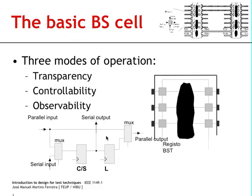You also see here that each basic boundary scan cell circuitry comprises two multiplexers and two memory elements. I will show you how these four elements combine to ensure these three modes of operation.